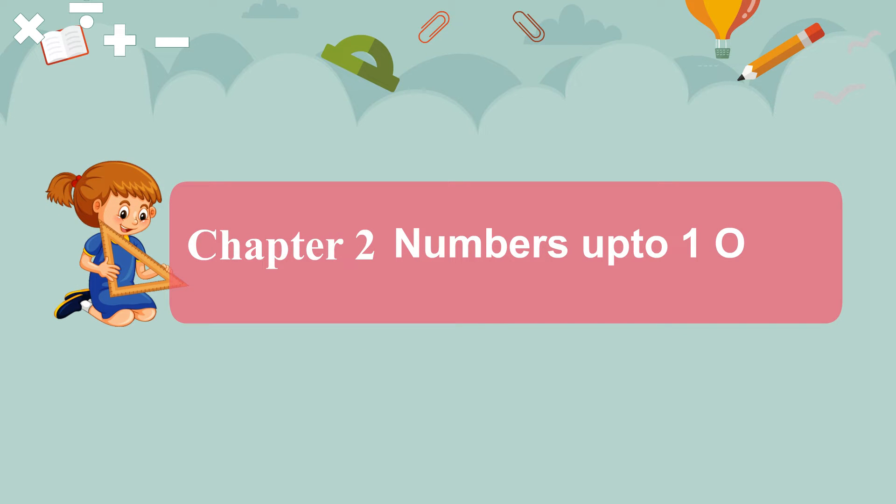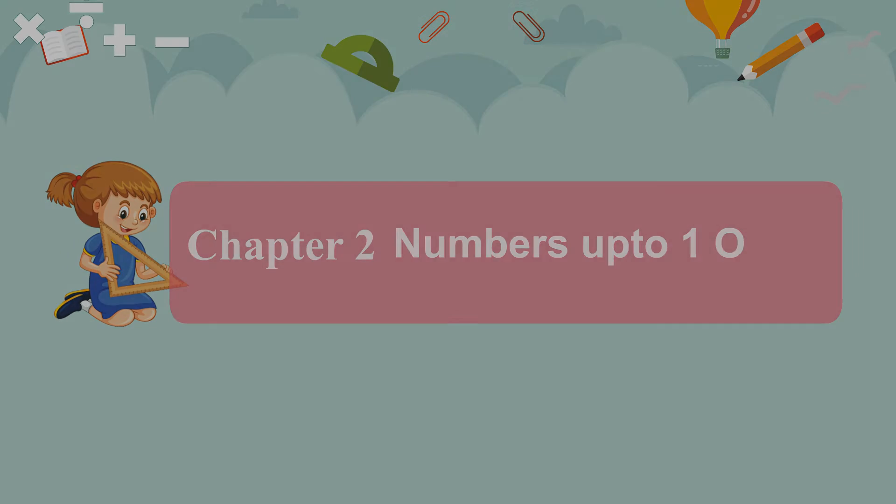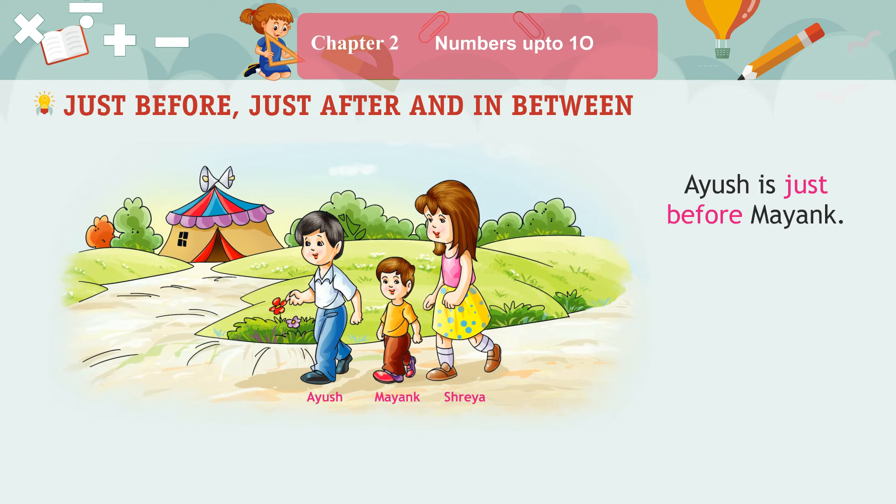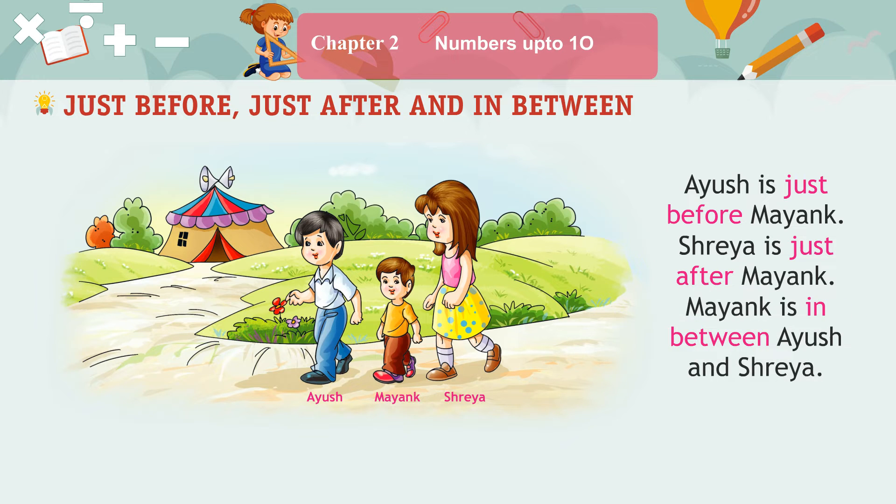Chapter 2: Numbers up to 10. Just before, just after and in between. Ayush is just before Mayank. Shreya is just after Mayank. Mayank is in between Ayush and Shreya.